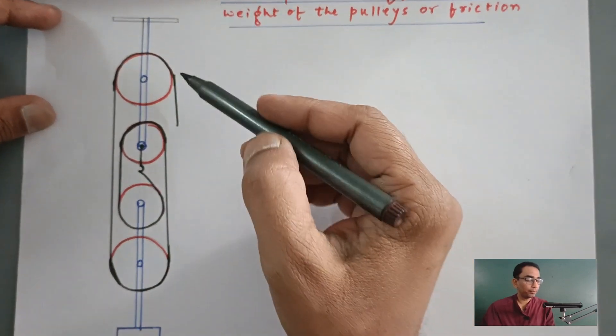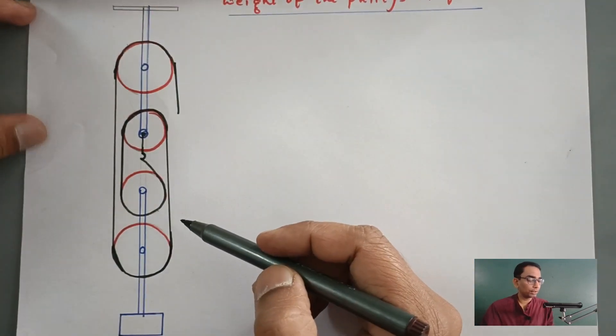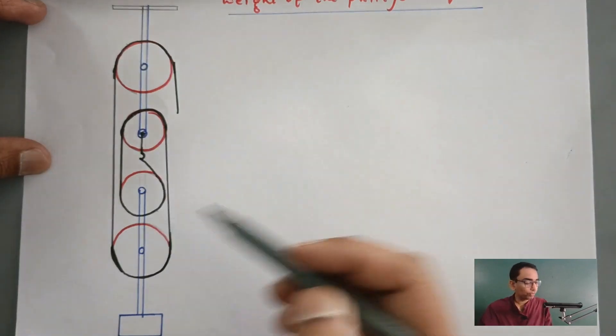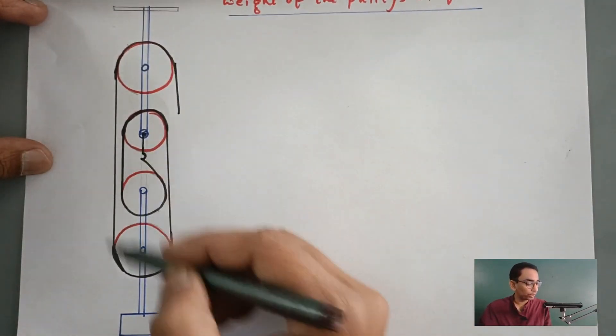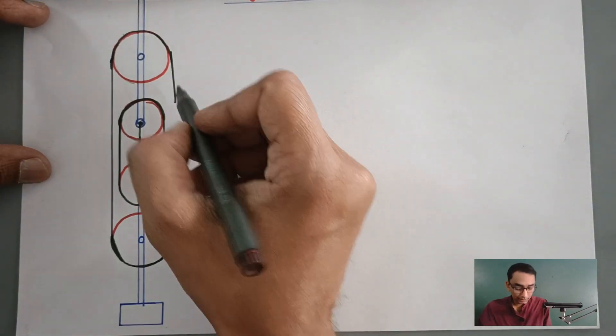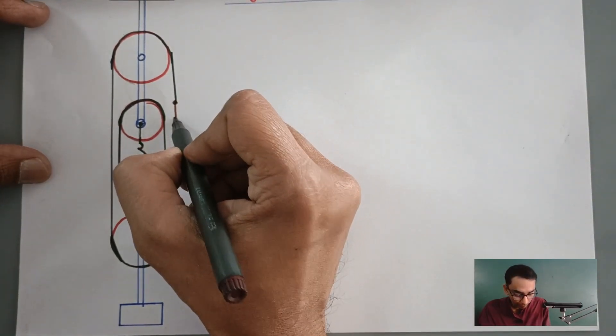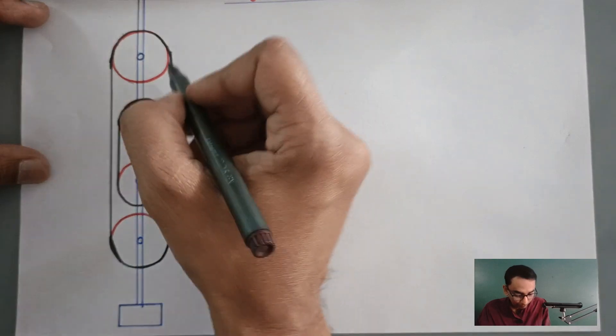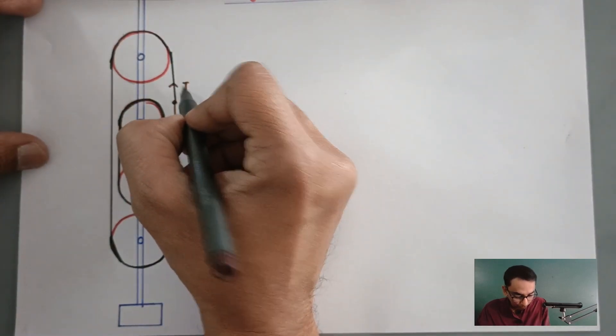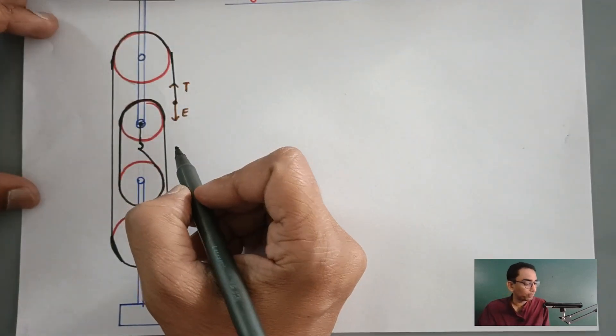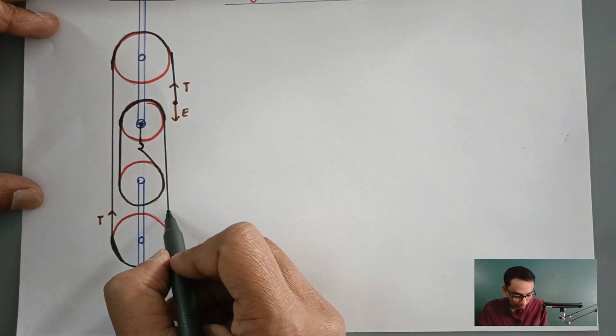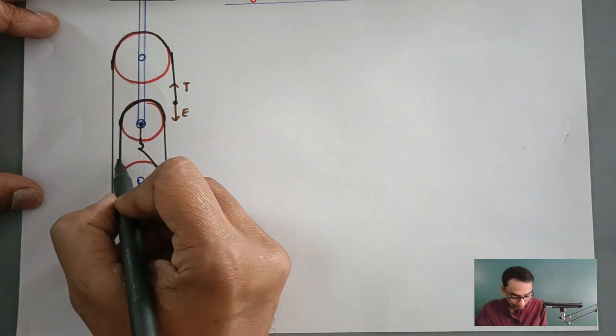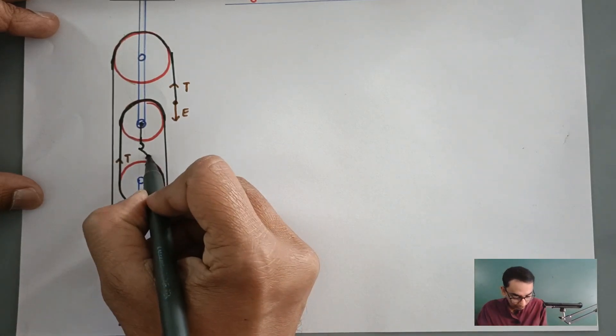In this diagram we have a tackle and a block system which contains total four pulleys. This part is known as the block and this part is known as the tackle. Now this is how we are going to apply the effort in the downward direction and the tension at this particular point will be facing in the upward direction as well as the tension in these four strings, this part, this part, here tension upwards, here tension upwards.